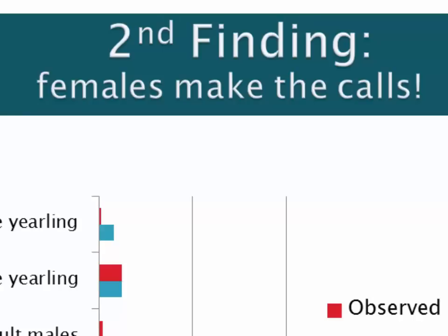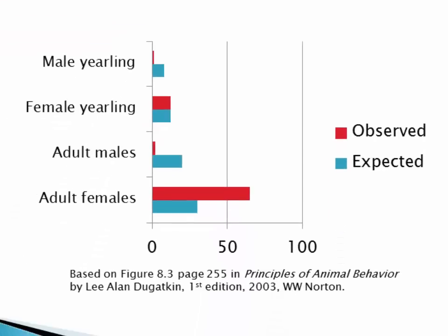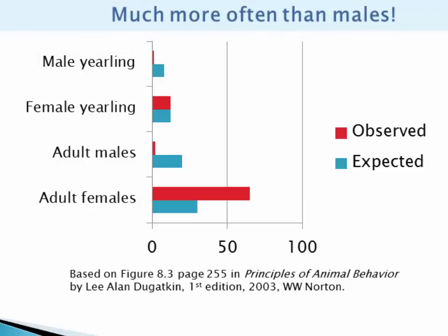Sherman's second finding was that it's mostly females making these alarm calls. In his data, male yearlings and adult males make almost none of the calls, while adult females make a great majority, and female yearlings make most of the rest. Males make far fewer calls than would be expected given their numbers in the group, while adult females make many more than expected. So females call much more often than males.